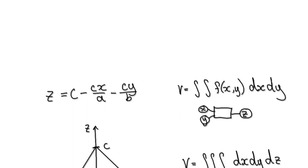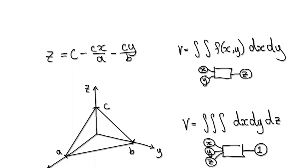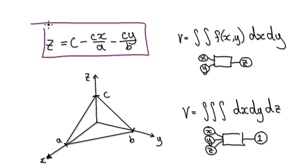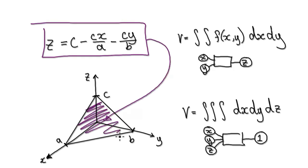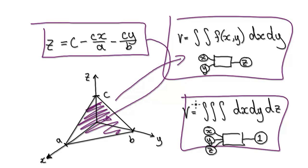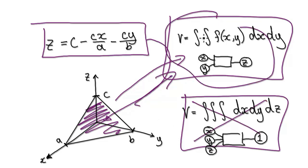Following on from the previous video, we were trying to work out the volume of this tetrahedron. We got to the stage where we worked out the surface, and now we can use the surface to work out the volume. We will look at the triple integration in the next video. In this video we're going to use this technique here, so we've got the surface.